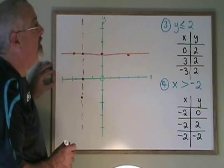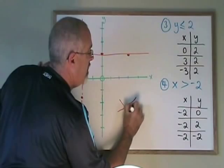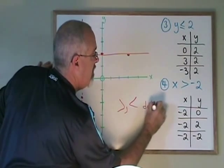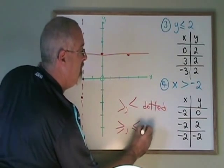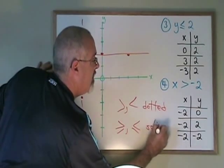Dotted lines for greater than and less than. And for greater than or equal to, less than or equal to, we use solid lines.